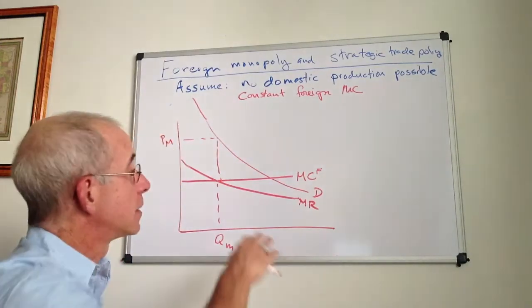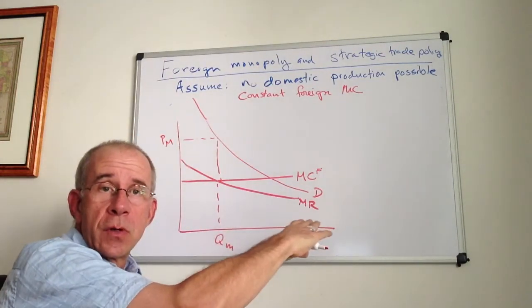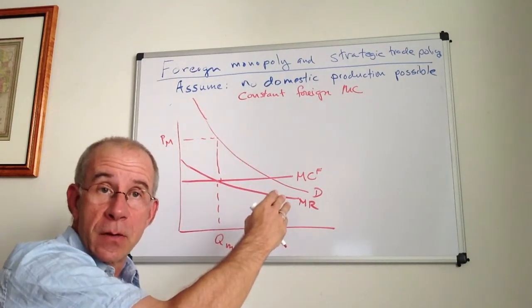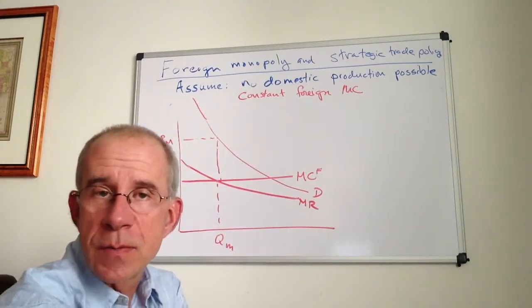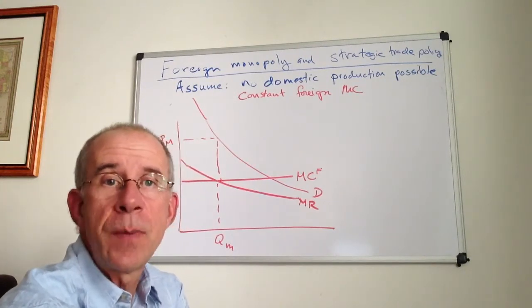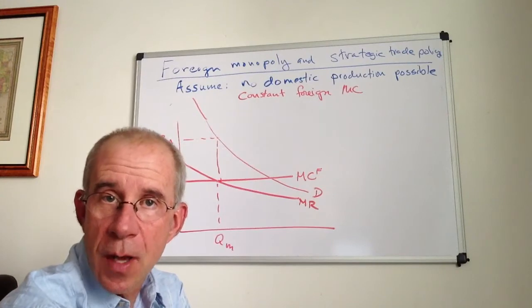The marginal revenue curve is going to be relatively flat compared to the demand curve. We're starting with a single foreign monopolist, and there is no possibility of producing this product domestically.